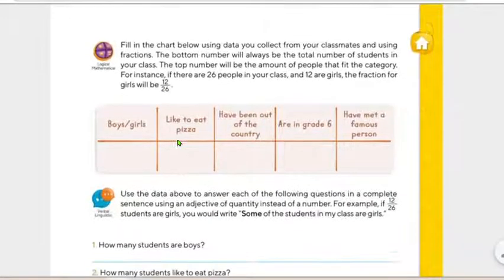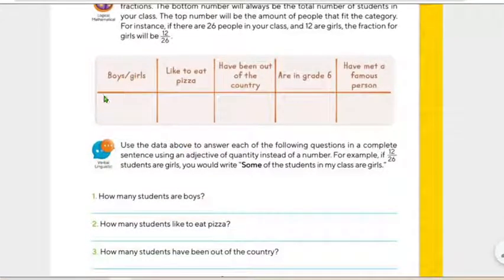So we're going to do this. Actually, we did this in the morning, right? Boys and girls. So how many are boys and how many are girls? So you need to put here the fraction that represents boys in your class and girls in your class. Now, how many students like to eat pizza? You say, oh, five students like pizza. Have been out of the country. Que han salido del país, right? Que han ido a Estados Unidos, a Brasil, a Inglaterra, donde sea, pero donde ocupas y llevar pasaporte. So have been out of the country. Are in sixth grade. Cuántos alumnos de tu salón están en sexto grado, okay? Have met a famous person. ¿Y cuántos han conocido a una persona famosa?